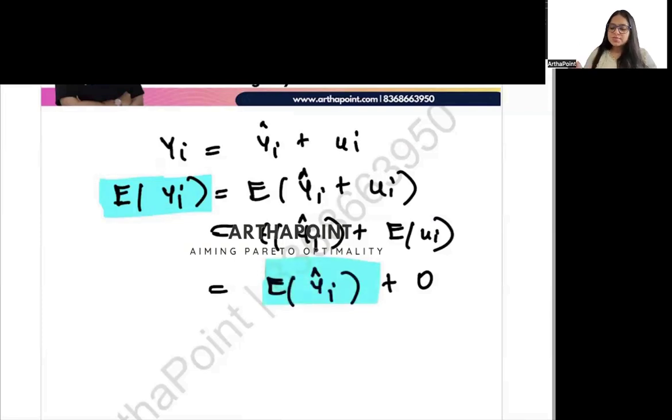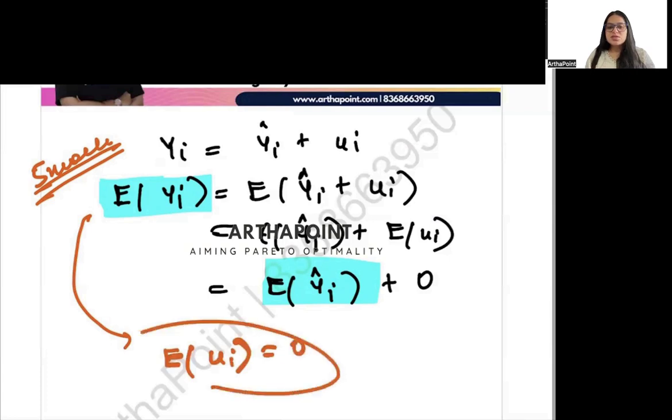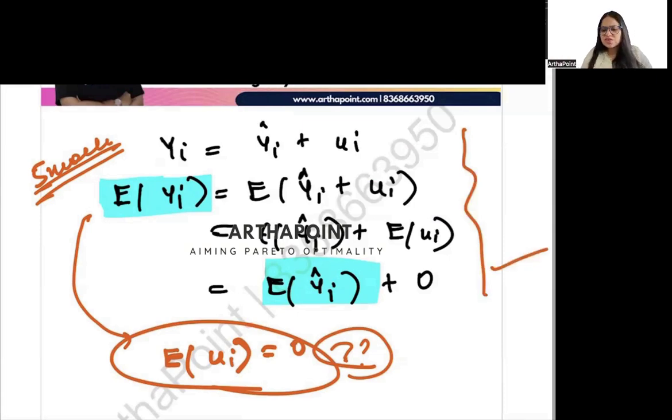Suppose this comes for more marks. This comes as a five marks question. Then you need to spend some time on proving why E of ui is 0. So you will have to go ahead and you will have to prove why E of ui is 0. That also will take some of your time. And you need to write those three, four lines. But if it is coming for two to three marks, then this much would suffice. There is nothing wrong. Just give this statement that we know that the expected value of the error term is 0. And that should be enough.